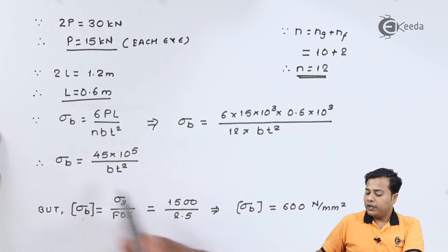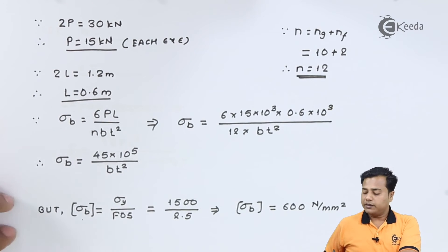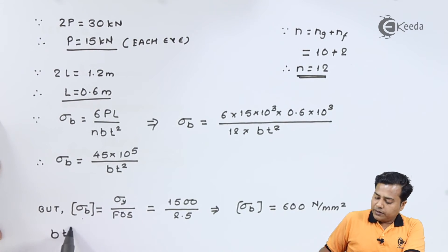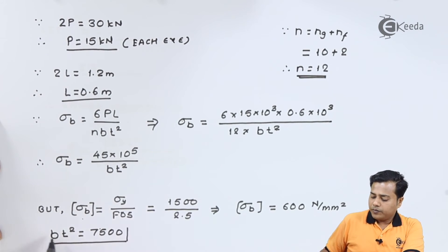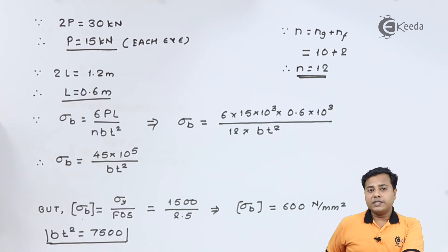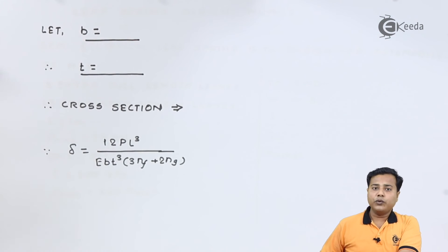Now substituting this value in the given expression we get Bt squared equals 7500. With this example, we have to go for the trial and error method or we have to select a standard width of the leaf spring. In PSG data book there are standard values that we can assume.